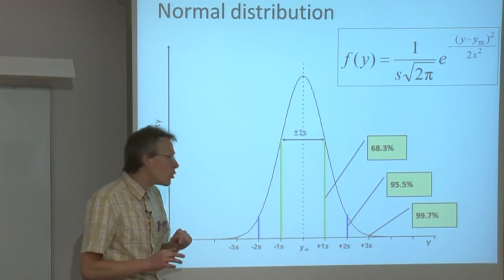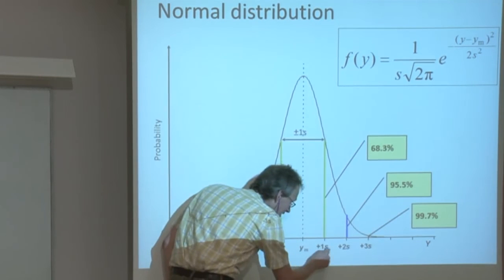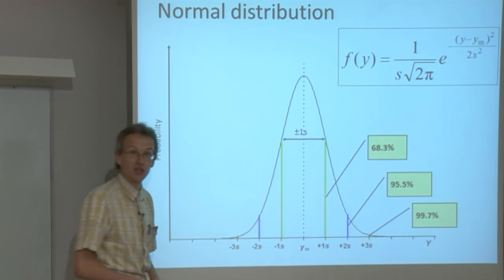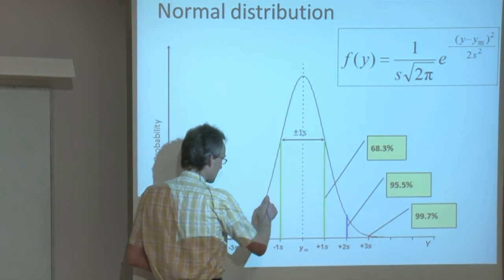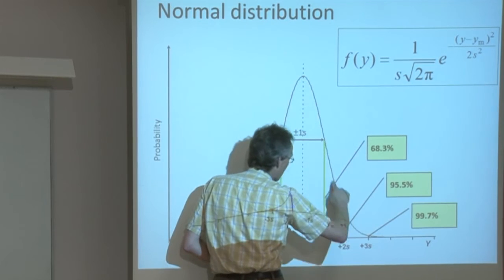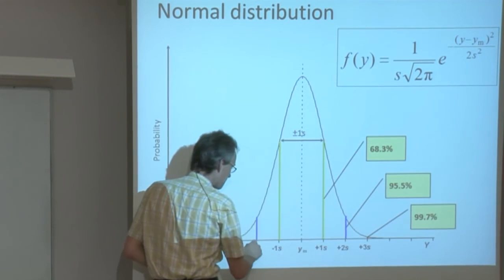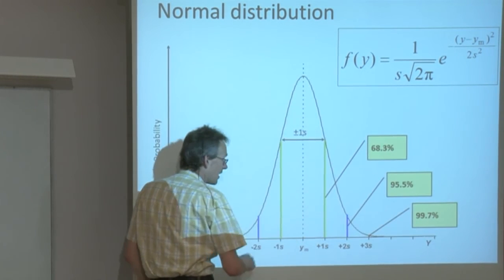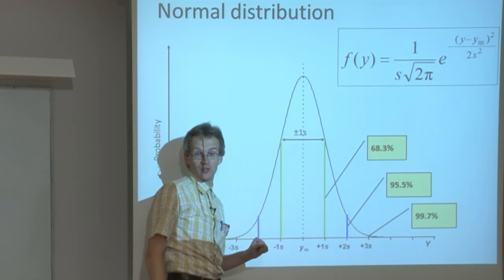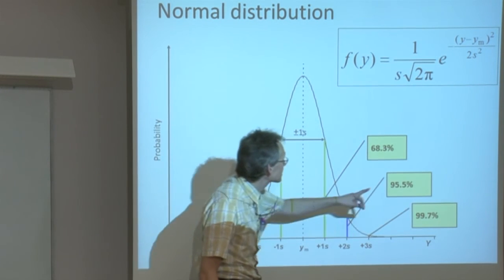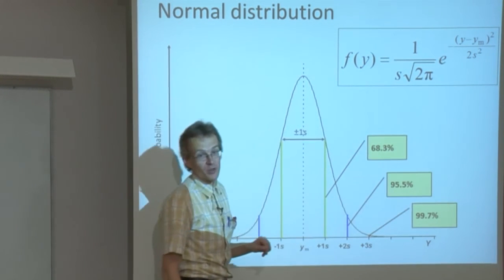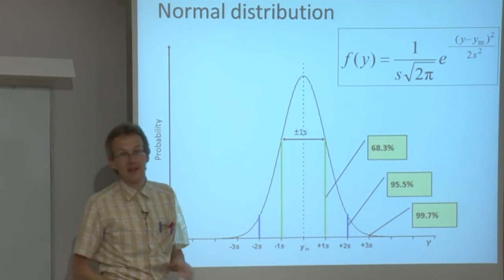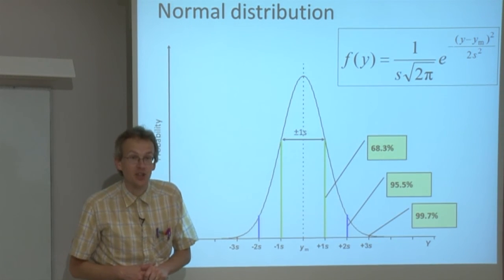We can multiply this standard deviation by some factor. If we multiply it by 2, then we get this kind of curve. Now the area of this part here, as related to the whole area under the normal distribution curve, makes up roughly 95.5%. And this here forms the basis of the so-called expanded uncertainty.